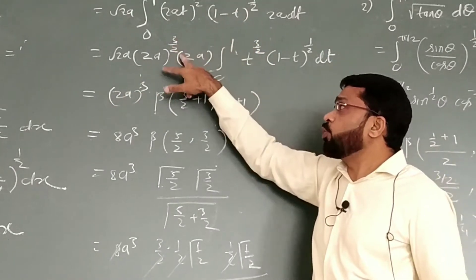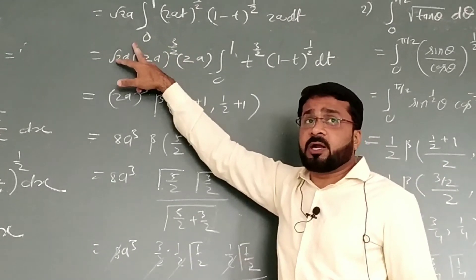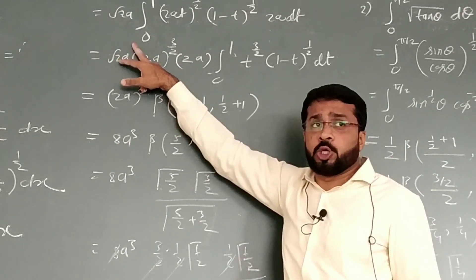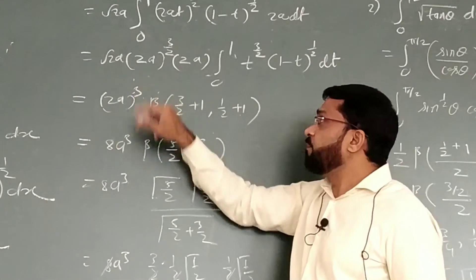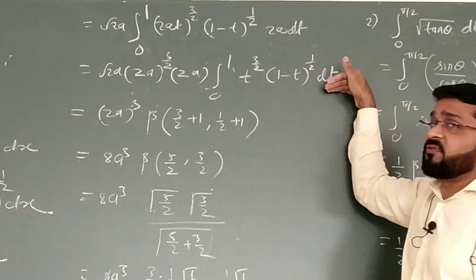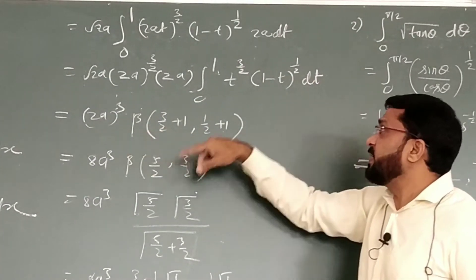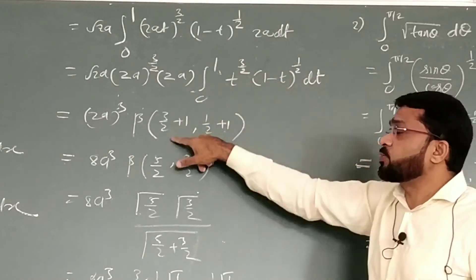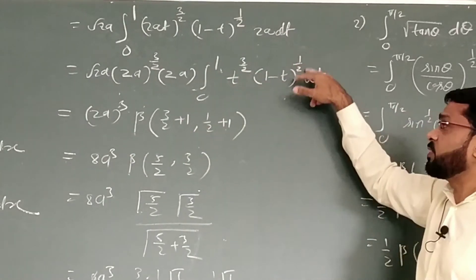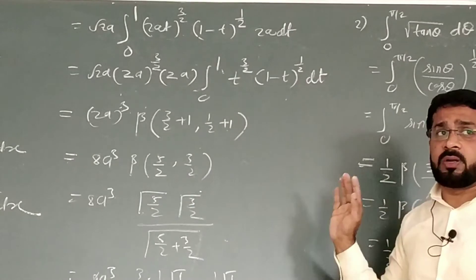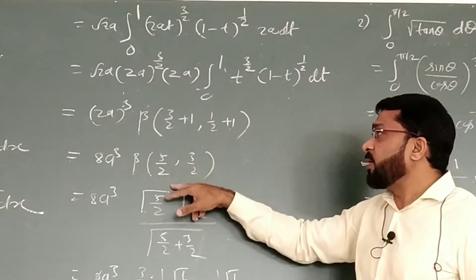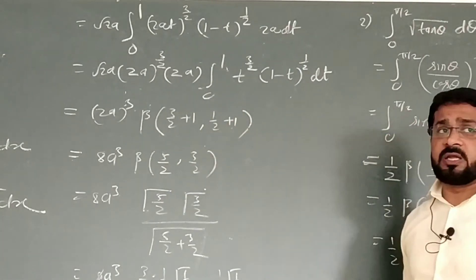Root, it is 2a to the power half. This is 2a to the power 3/2. This is 2a to the power 1. So, 1 plus 3/2 plus 1/2, that is coming out to be 6/2. So it will be 2a³. Then this integral by definition can be written as beta of, power of t 3/2 plus 1, then power of 1 minus t, 1/2 plus 1. 3/2 plus 1 means 5/2. 1/2 plus 1 means 3/2.